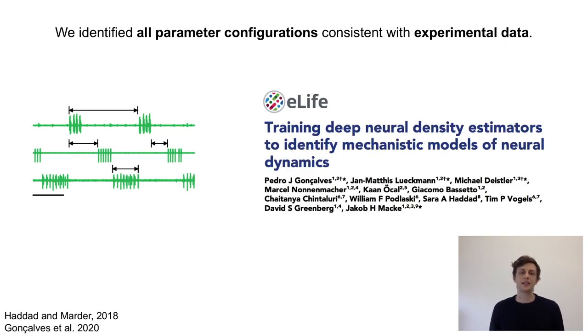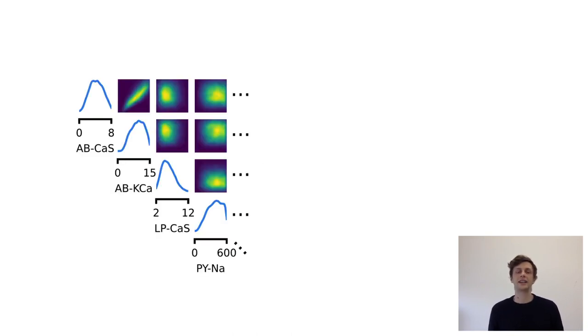We applied the method we introduced to the pyloric network in the crab, and we thereby obtained a distribution over all membrane and synaptic conductances, in total 31 parameters, which can all reproduce experimental data.